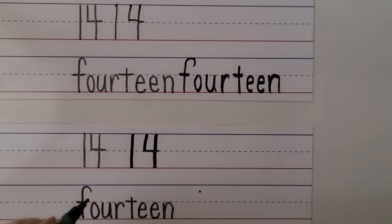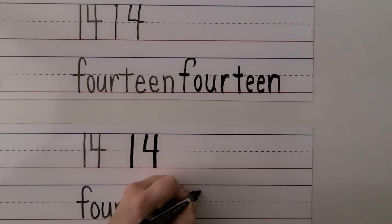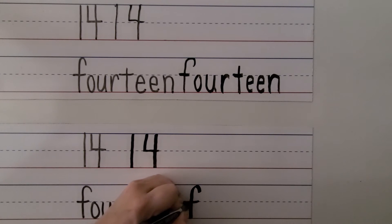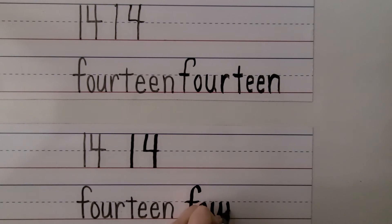We can write the word fourteen. We have F-O-U-R and teen. F, we cross it coming towards our hand. O, U, up and bounce down. R. We make our T by drawing the line and crossing it towards our hand. E, E, N. 14.